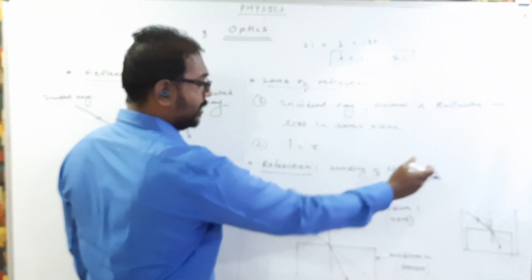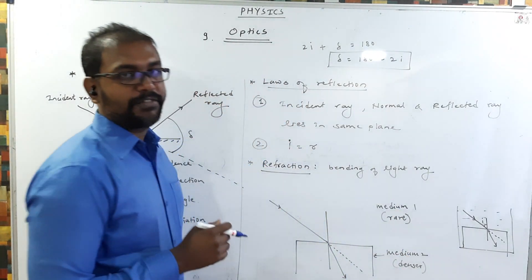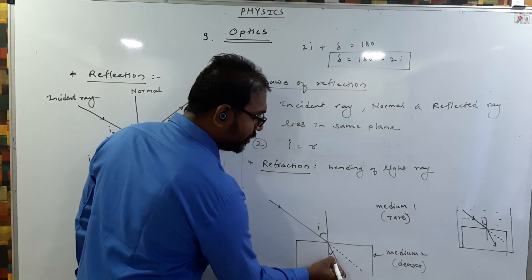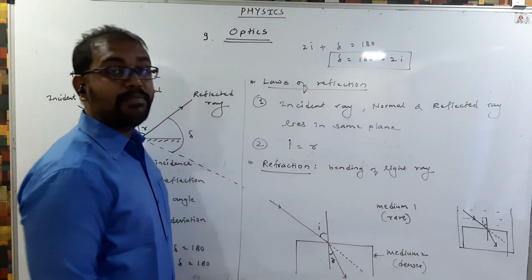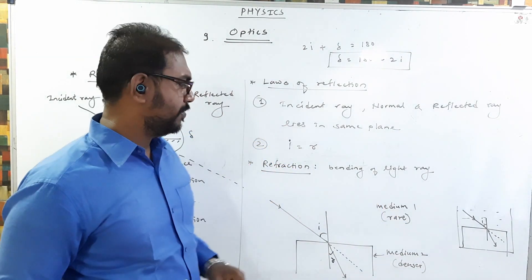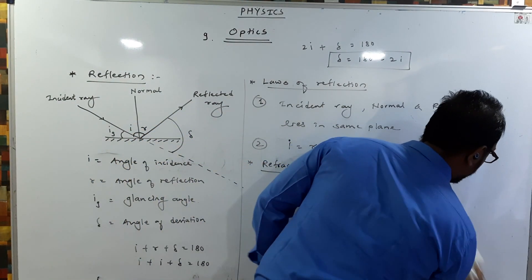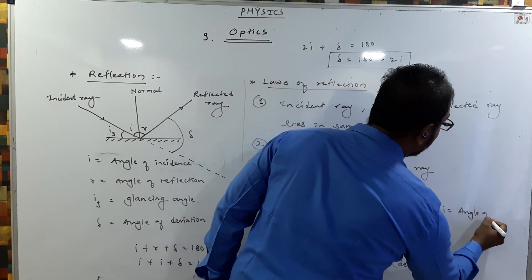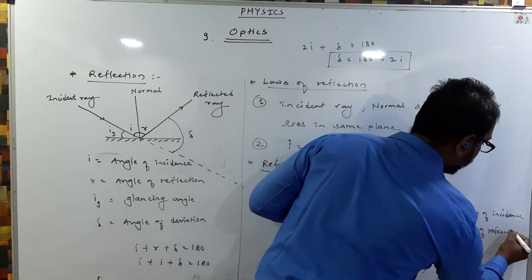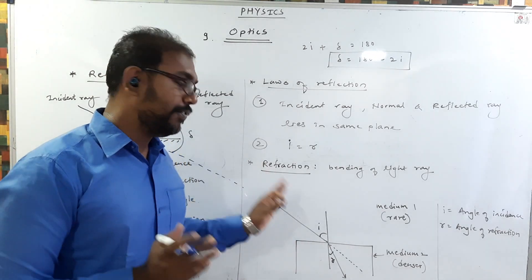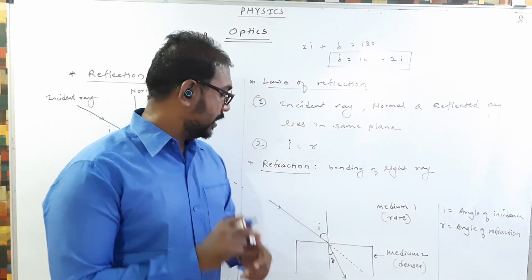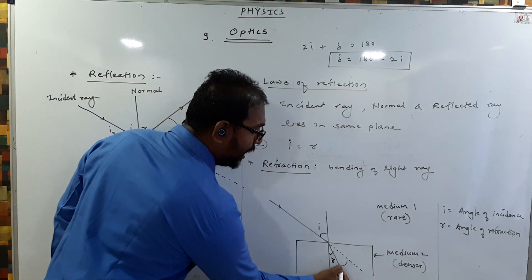So refraction is the bending of a light ray when it travels from one medium to another medium. This angle is the angle of incidence, and this angle is the angle of refraction. Note: earlier I used R for angle of reflection, but when talking about refraction, R is the angle of refraction. So here, I is the angle of incidence and R is the angle of refraction.